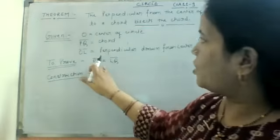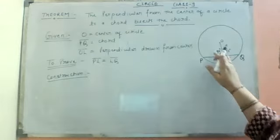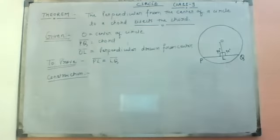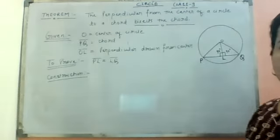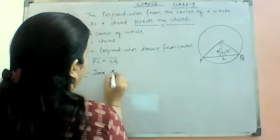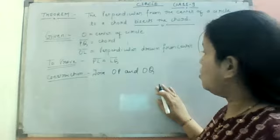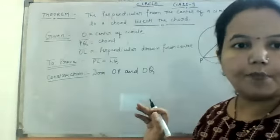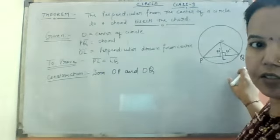In the proof, we are going to write PL equal to LQ. For this, we join OP and OQ. When you join OP and OQ, OP is the radius and OQ is also the radius. Why? Because P is a point on the circumference of the circle and Q is also a point on the circumference of the circle. That is why OP equals OQ.